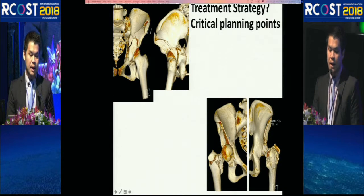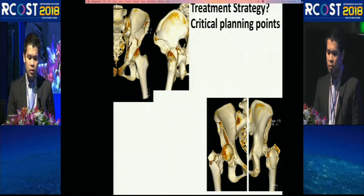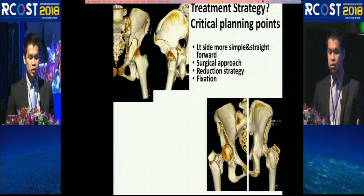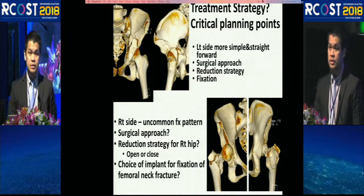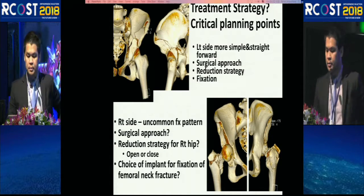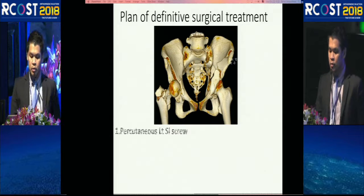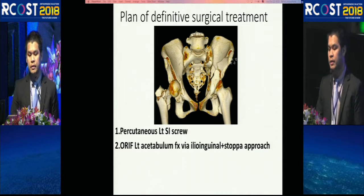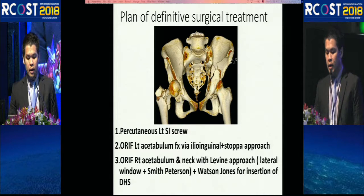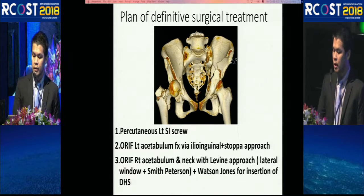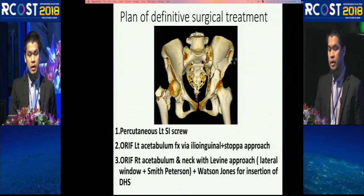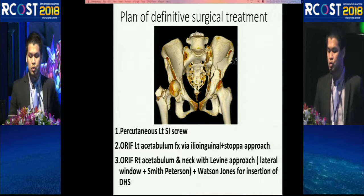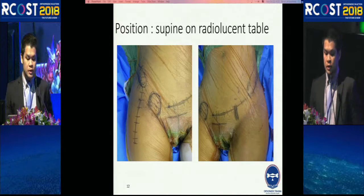My plan for definitive treatment: I start from the back on the left side with a percutaneous SI screw, then reconstruct the acetabulum using an ilioinguinal-Stoppa approach. On the right side I use the Levine approach — a lateral window combined with Smith-Peterson for reduction — and Watson-Jones for fixation of the neck.